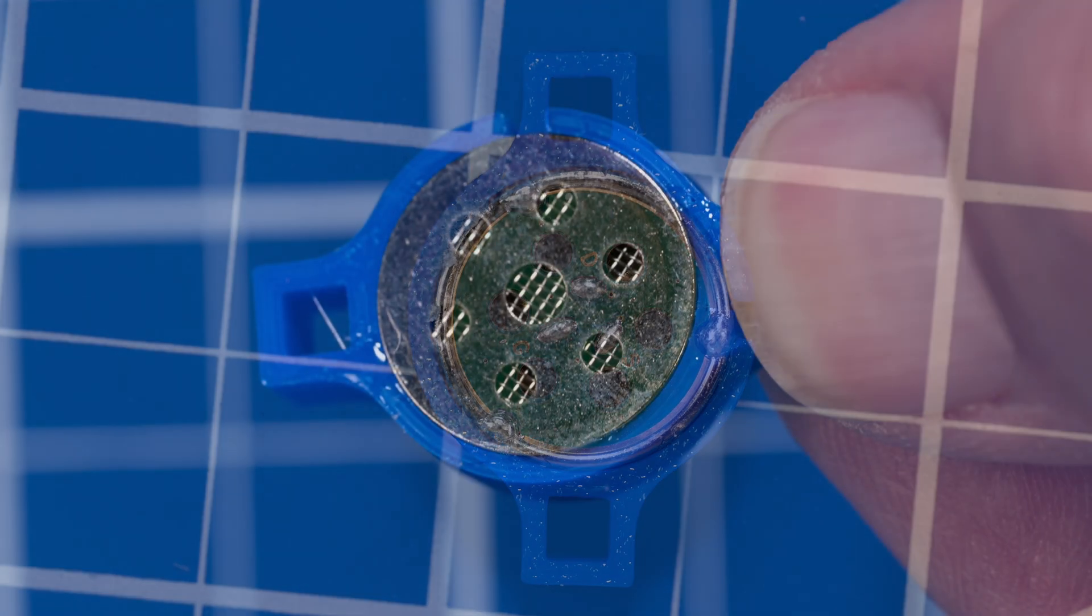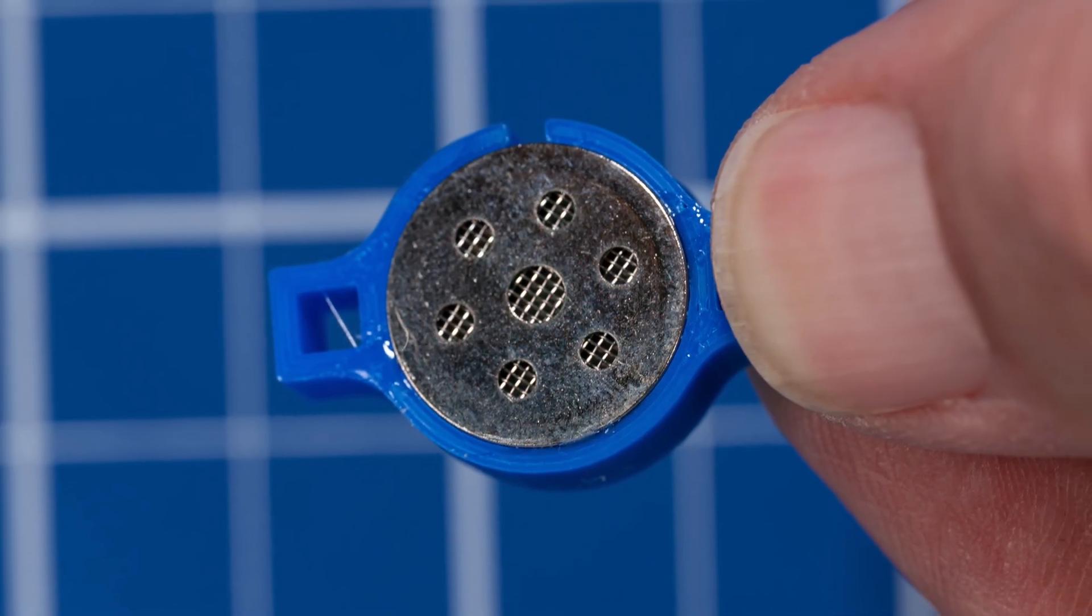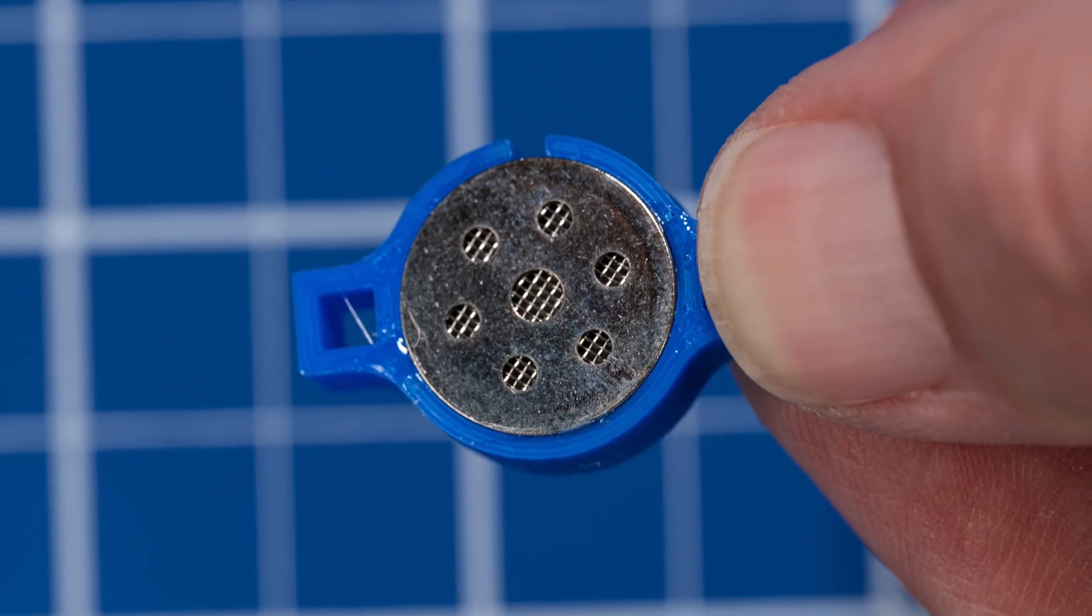Using a small amount of E6000 glue, mount each capsule into its holder. Let the glue dry for about four to six hours. Now for the mic capsule wiring.